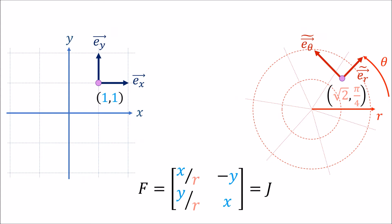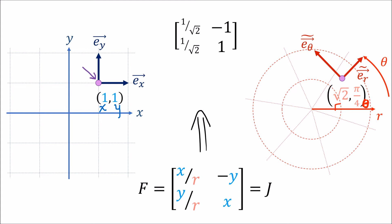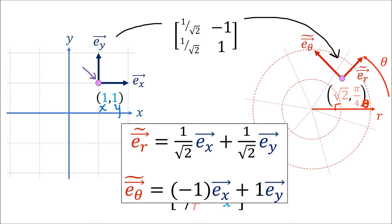So we've basically invented the Jacobian matrix, or the forward transform, that takes us from Cartesian basis vectors to polar basis vectors. Let's see examples of it being used. Take this purple point, which in Cartesian coordinates has x = 1, y = 1, and in polar coordinates has r = √2 and θ = π/4 radians. Using the Jacobian matrix as a template, we can substitute in the coordinate values and get this matrix. The coefficients in this matrix act as the forward transform, which builds up the polar basis vectors out of the Cartesian basis vectors at this specific purple point.